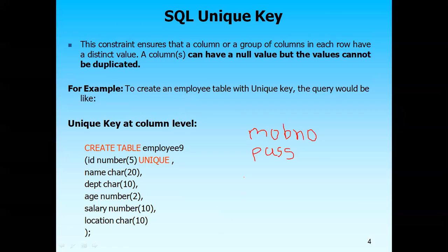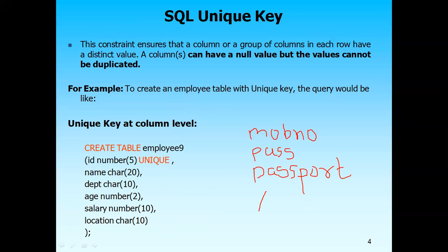One table can have multiple unique keys. Examples of unique keys for a student include passport ID, mobile number, and other card ID. The primary key will be only one field selected for unique identification of the record, while these are examples of the unique keys.